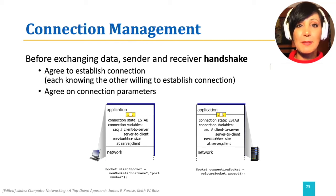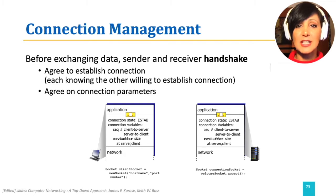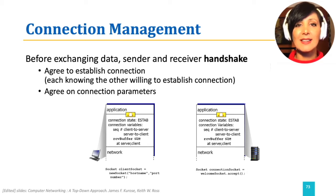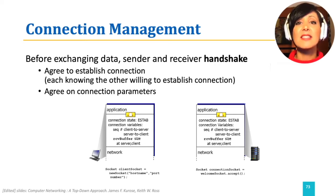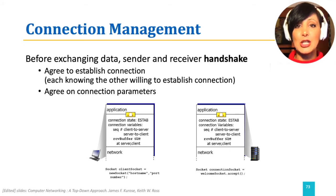Remember, TCP is connection-oriented. In order to be a connection-oriented protocol, TCP needs to establish, maintain, and tear down the connection. For connection establishment, which is the first phase, the sender and receiver should agree to have a connection — they should agree they want to communicate, that the communication needs a connection, and they also need to agree on the parameters of the connection, like sequence numbers for each side and receiver buffer size at each side.